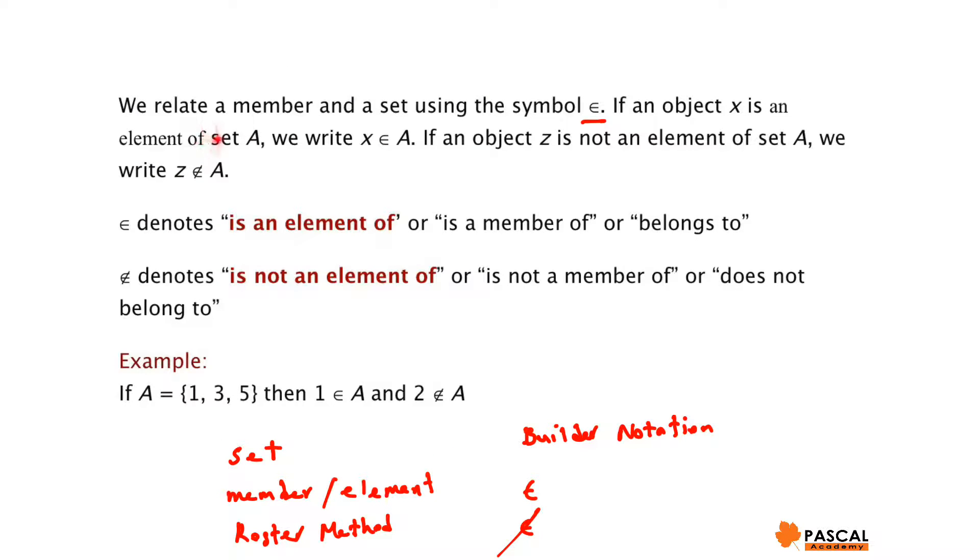We relate a member and a set using this symbol, a Greek letter Epsilon. If an object X is an element of set A, we write X with this notation A.